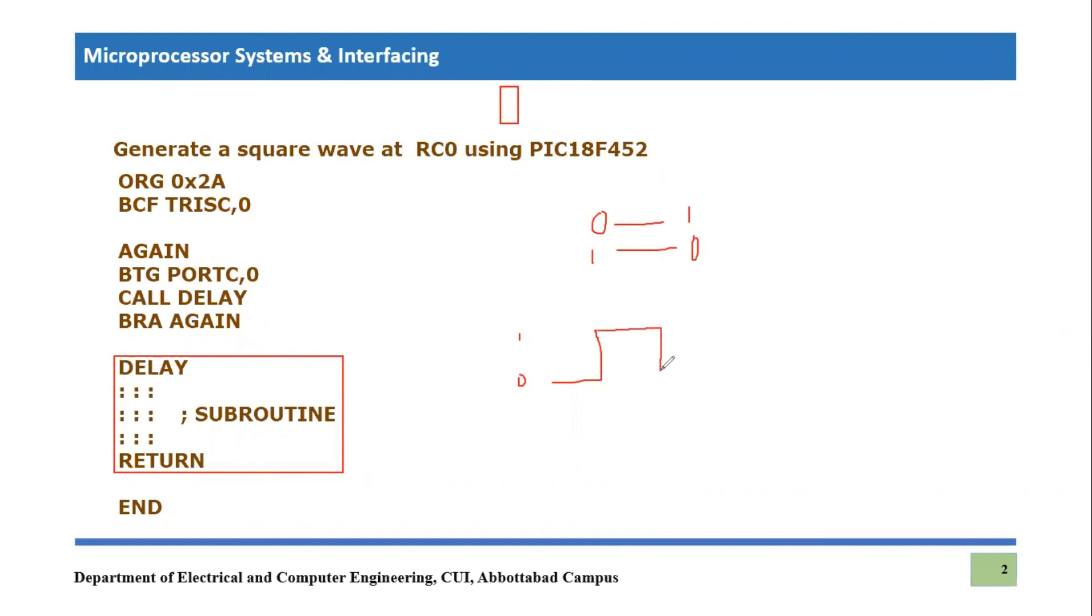So after certain delay, this logic will become again zero level and then it will become one. So this is how we are generating a square wave. So now let's come to the topic which we are going to discuss in this course. What is the duty cycle of this square wave? Since it is a square wave, it will be on and off for equal amount of time.